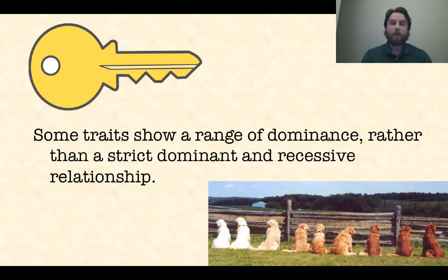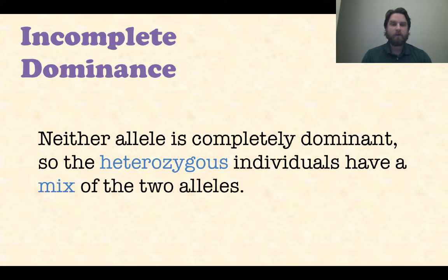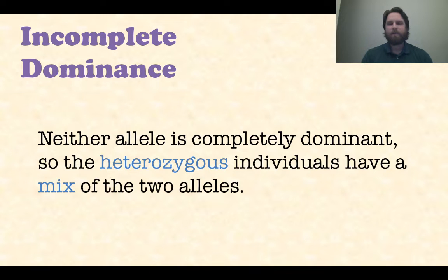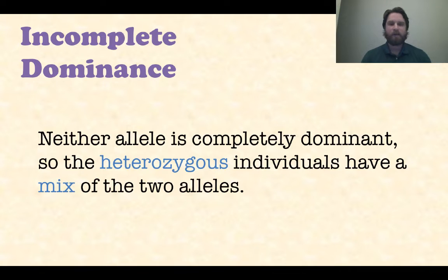Some traits show a range of dominance rather than a strict dominant and recessive relationship. So let's look at our first example: incomplete dominance. This is when neither allele is completely dominant, so heterozygous individuals actually have a nice mix of the two alleles. You see this a lot in color.